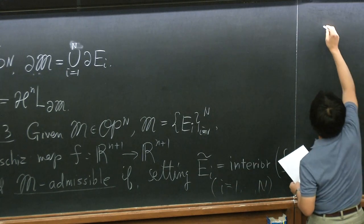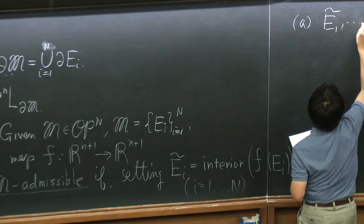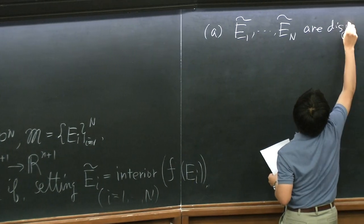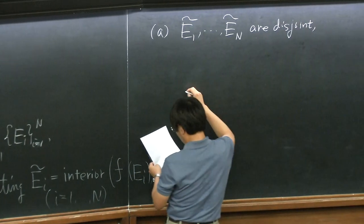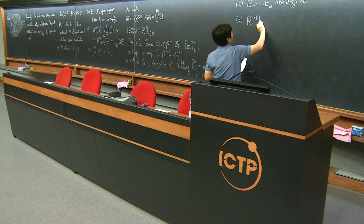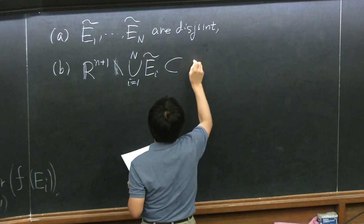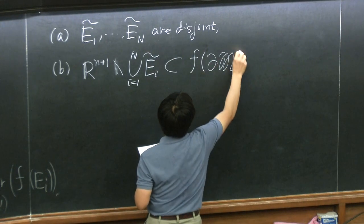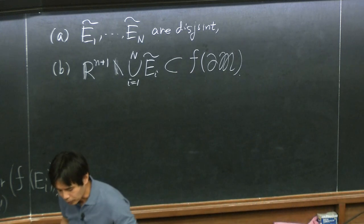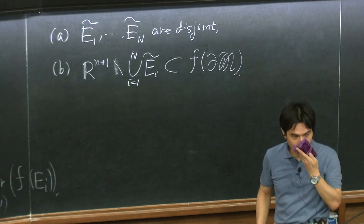The requirement is: condition A, that Ẽ_1, ..., Ẽ_N are disjoint. And condition B, that the complement of these sets is included in the image of the boundary. If A and B are satisfied, I say that F is M-admissible. This obviously depends on the open partition, so depending on the open partition you have this admissible class.